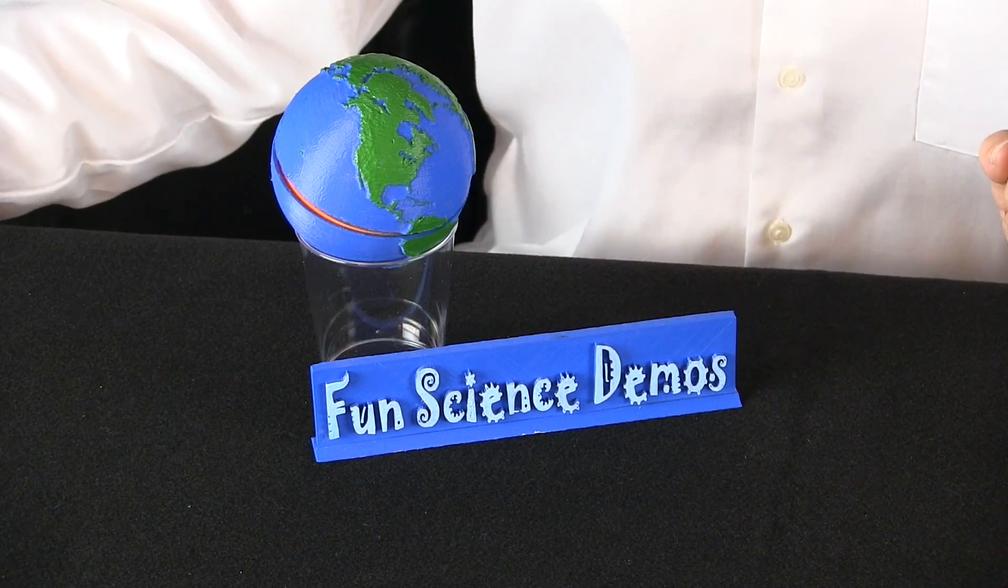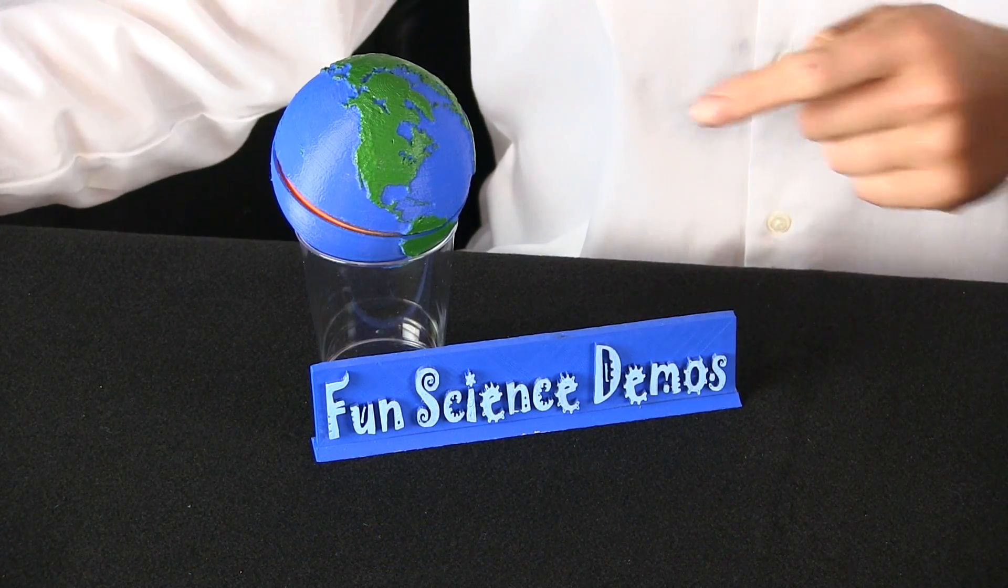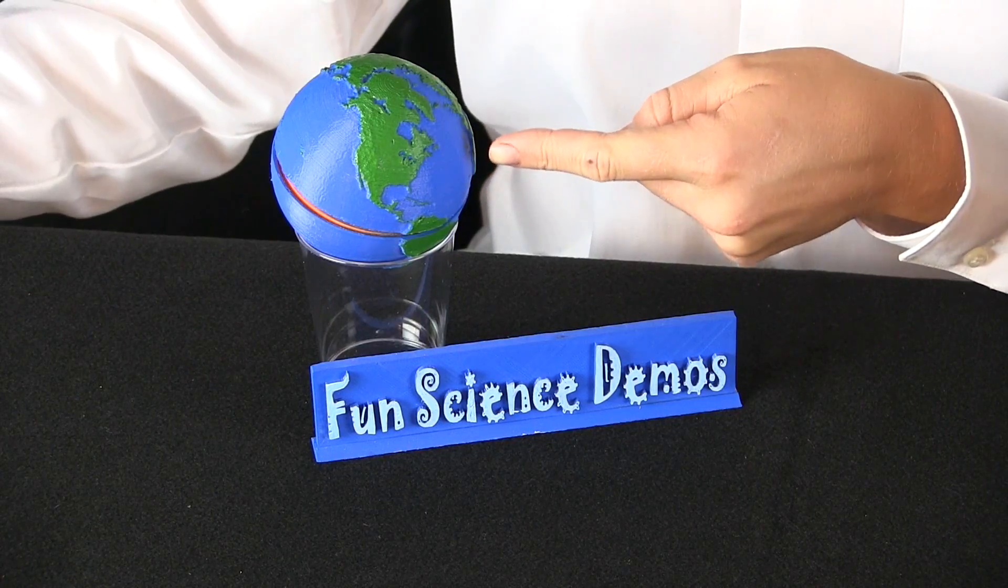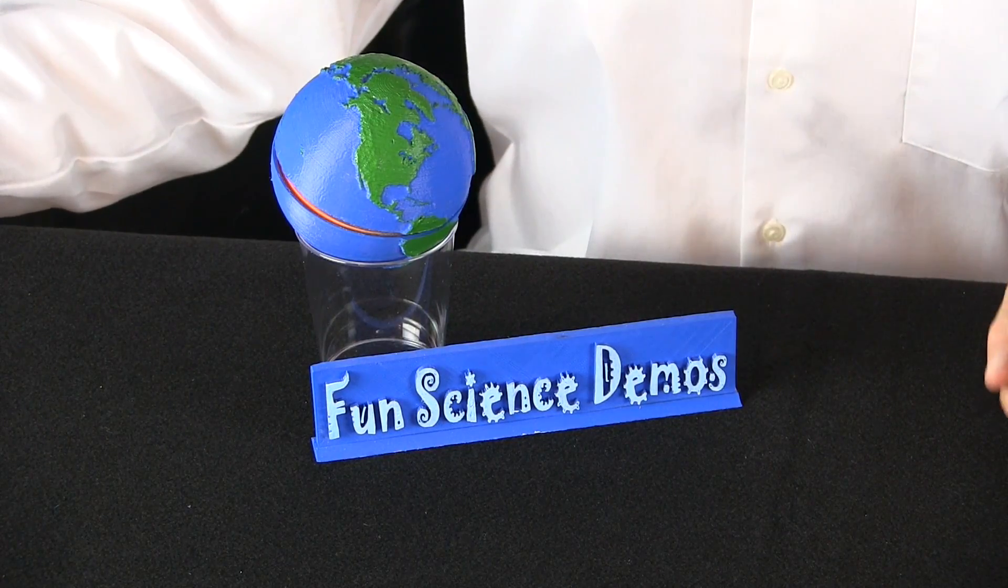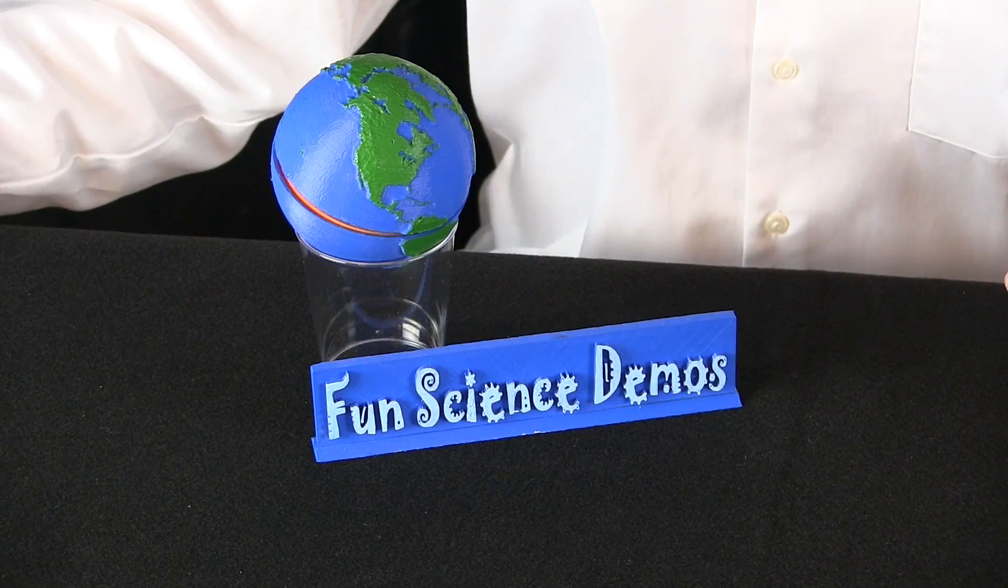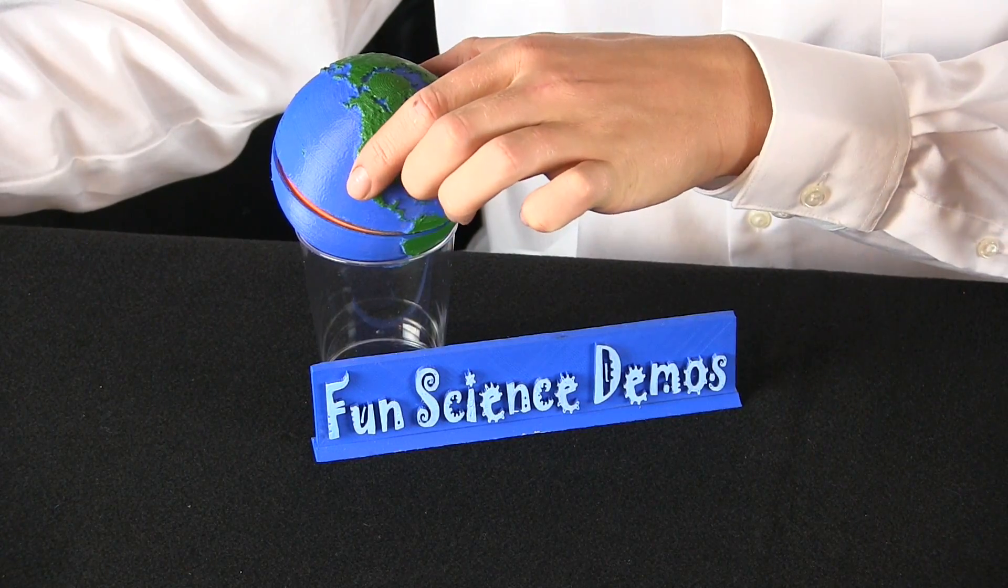We've zoomed in on our 3D printed model. In this model, the continents are green and the ocean is blue. The continents and the ocean sit on top of a crust. Let's see what's underneath the continents and the ocean.